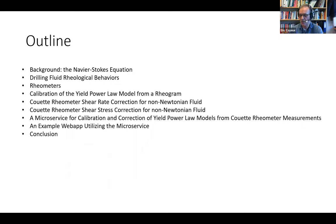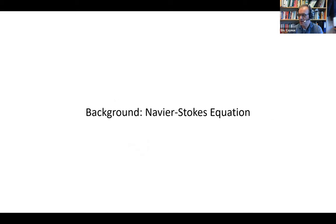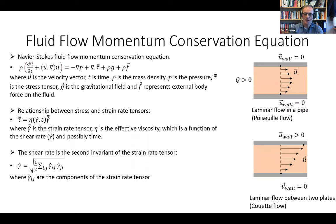Feel free to interrupt if you have any questions. Let's start with the basics and the Navier-Stokes equation displayed here in tensor form. We have u, which is the velocity vector; t is time; rho is mass density; p is pressure; tau is the stress tensor; g is the gravitational field; and f is the external body force on the fluid.